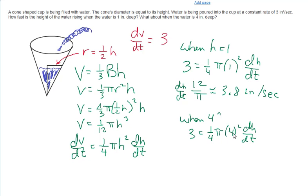If we divide this out, multiply here, divide, we get 3/(4π) for our dh/dt, and that equals approximately 0.24 inches per second.